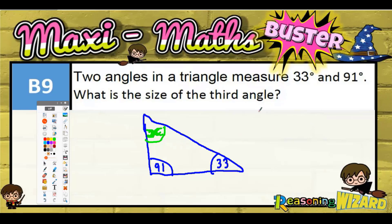So basically, angles in a triangle, what you need to know if you don't already, is that they total 180 degrees. So we need to make these add up to 180.